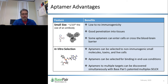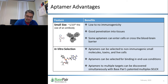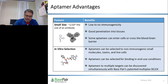Aptamers offer multiple advantages over antibodies in a wide variety of contexts. First, aptamers are less than one tenth the size of antibodies, so sterically they're better able to access tissues and tight spaces on cell surfaces, both in vivo — for drug delivery, for example — and in vitro in tissue histology. Second, SELEX itself is an in vitro process, so unlike conventional antibody production, aptamers can be selected to bind small molecules that are often nonimmunogenic or simply too toxic for successful antibody production.